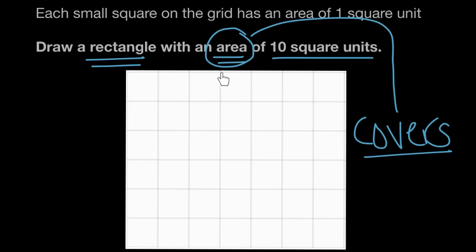We could try just drawing a rectangle right across this top row until we get 10 square units, but the problem there is there's only 1, 2, 3, 4, 5, 6, 7 square units going across the top. So we can't just do one long row of 10 square units.